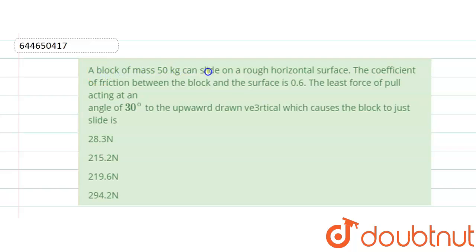The coefficient of friction between the block and the surface is 0.6. The least force of pull acting at an angle of 30 degrees to the upward drawn vertical which will cause the block to just slide.